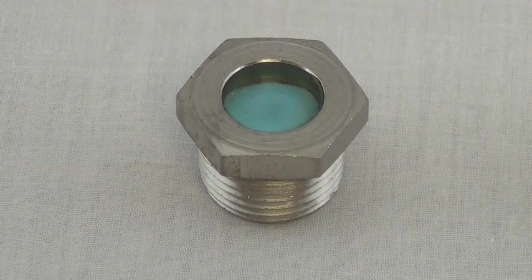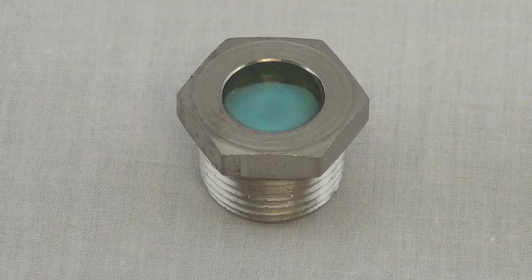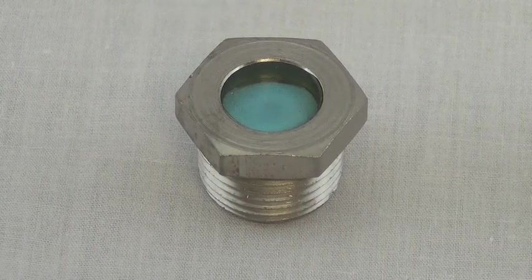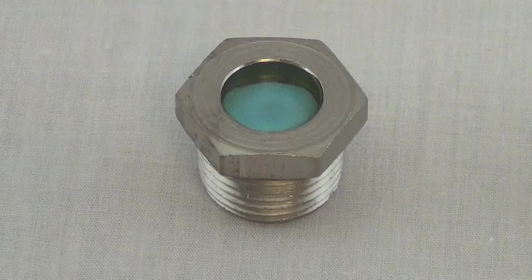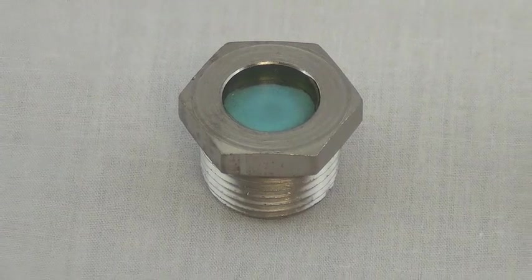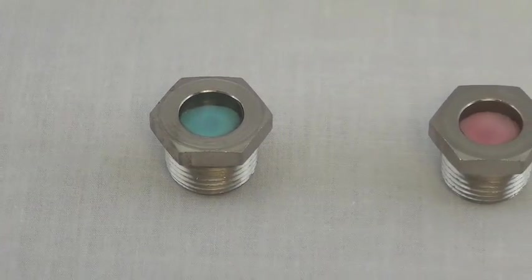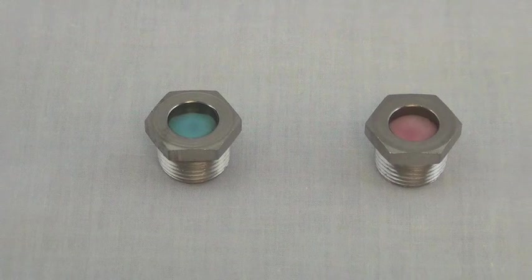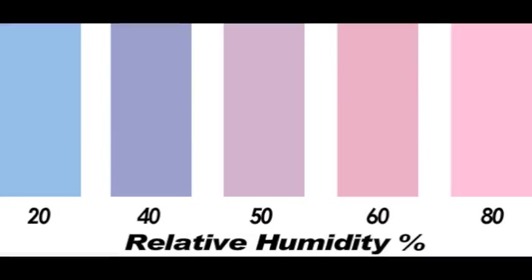The concept of the moisture indicator is simple. Good, dry air will keep the moisture indicator paper blue in color, which you can see through the fitting sight glass. If moisture becomes present in the airline, the indicator paper will begin to turn pink, as this moisture indicator chart shows.